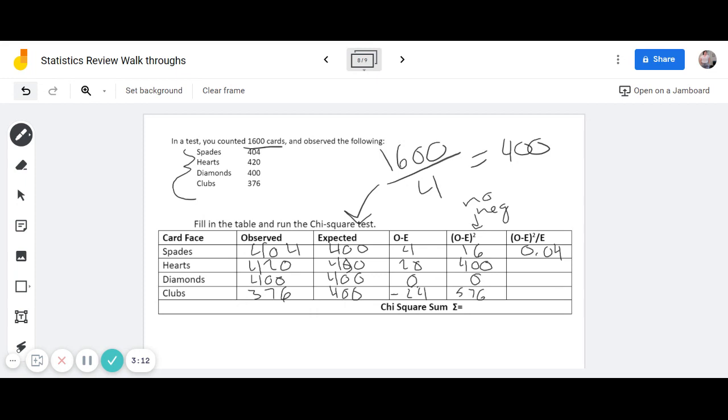400 divided by 400 is 1. 0 divided by 400 is 0. And 576 divided by 400 is 1.44.